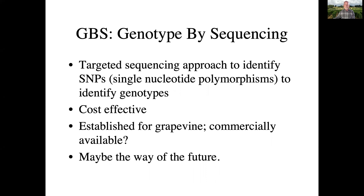I hope you found this talk informative and that you go out and look at the leaves of your grapevines — look at the variation on a single vine and between different vines. Know that if you really want to know what grape variety you have, you need to have your DNA sequenced and identified. UC Davis does perform that methodology and can identify your genotype if you're concerned. Thank you and have a good day.